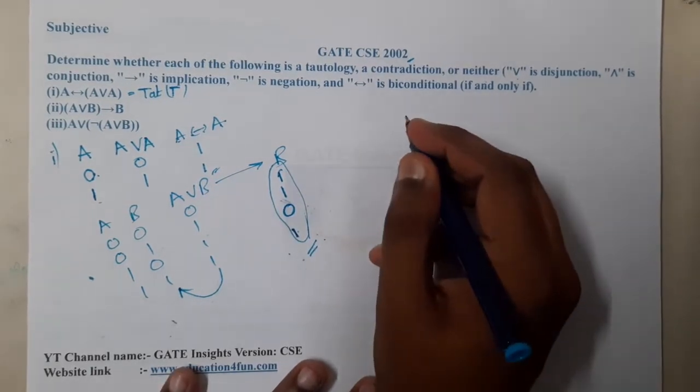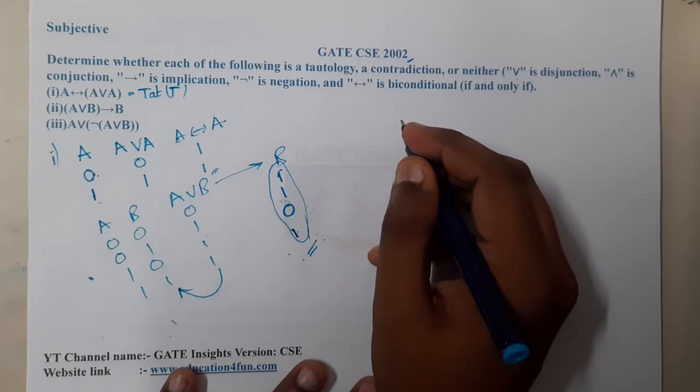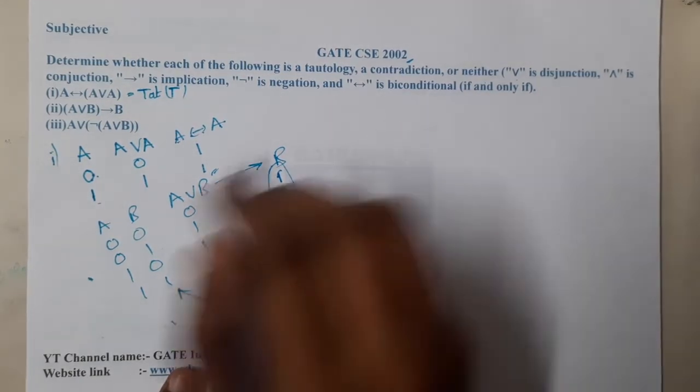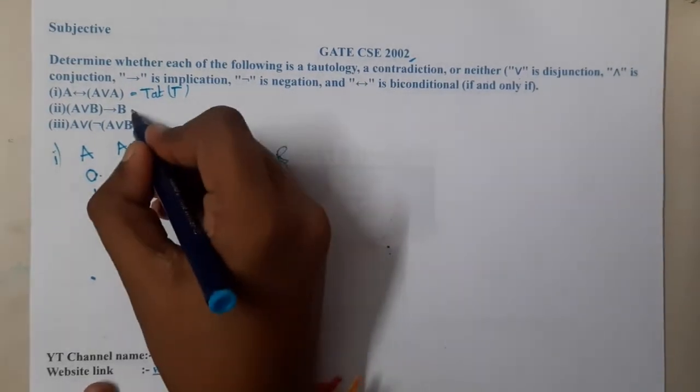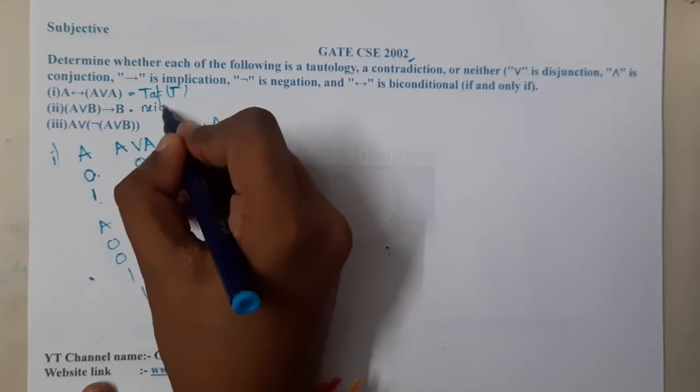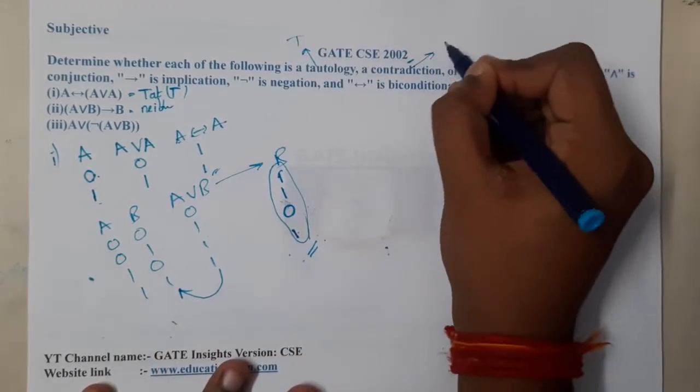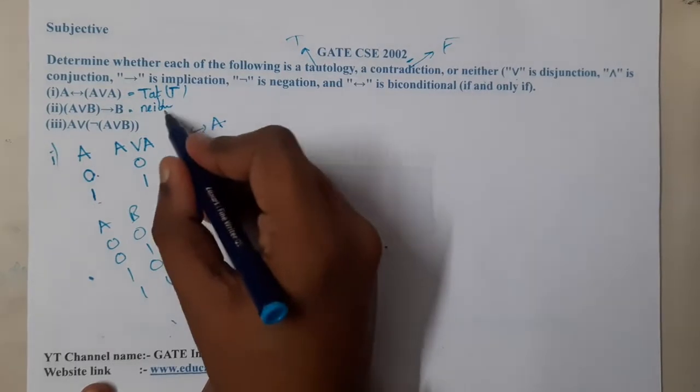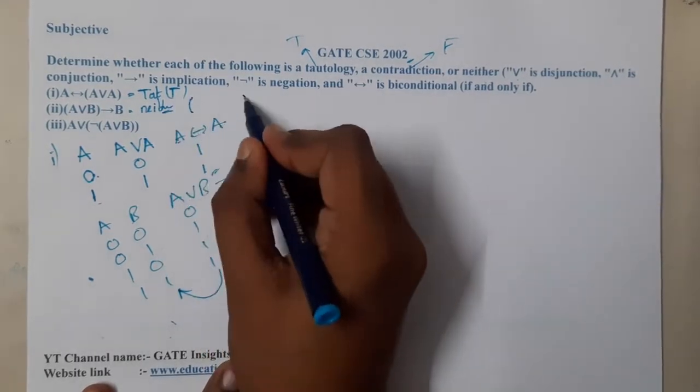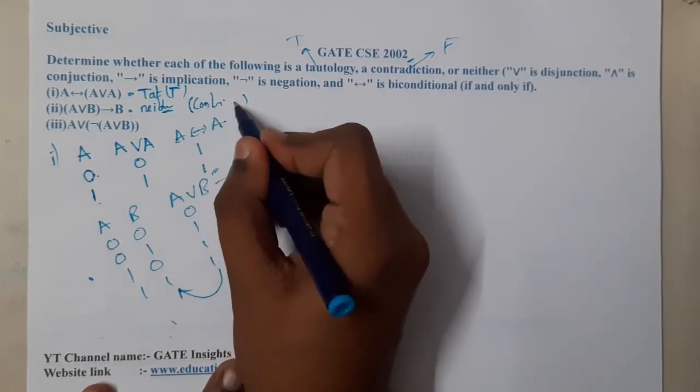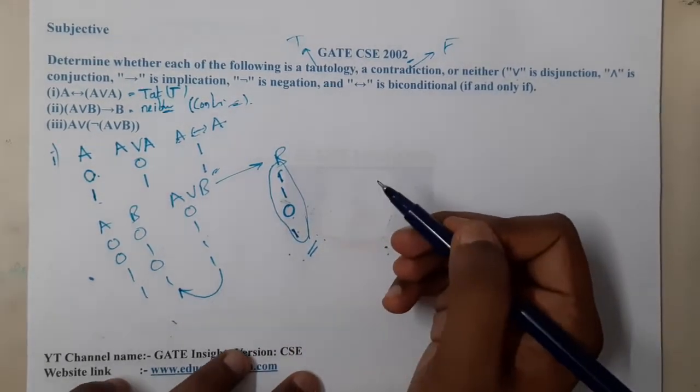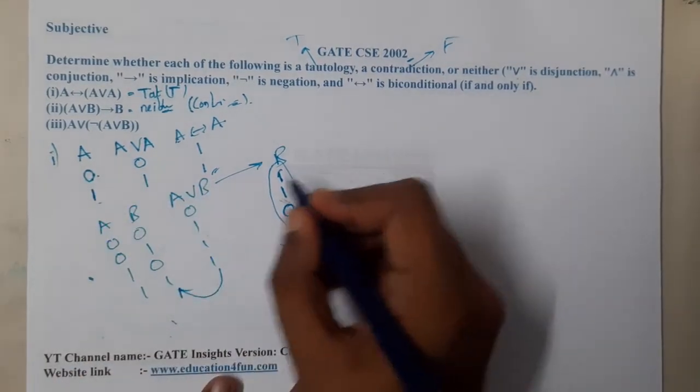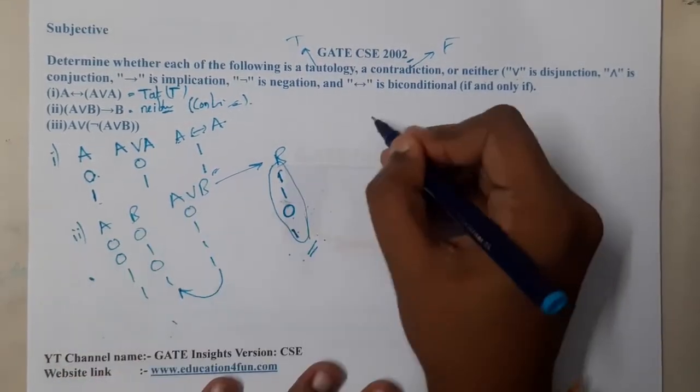With this understanding, I think we can say that it is neither, because it is not having all truths or it is not having all false. So it is neither, and there is an exact word for this which is called contingency. Basically, a mixture of truths and false is nothing but a contingency. Let us continue to option three.